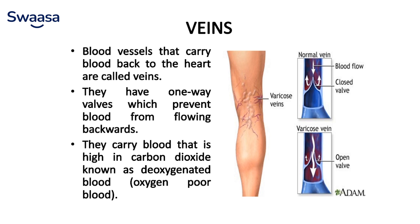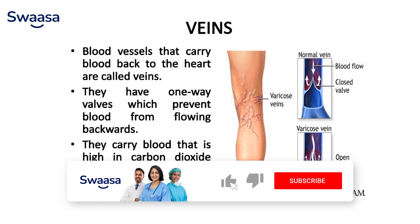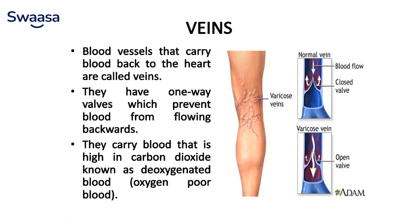Veins are blood vessels that carry blood back to the heart. They have one-way valves which prevent blood from flowing backward, and they carry blood high in carbon dioxide, known as deoxygenated or oxygen-poor blood. In varicose veins, the valve walls open abnormally, leading to improper blood flow. The rupturing and opening of the valves leads to varicose vein problems.